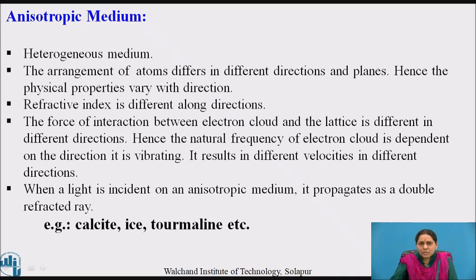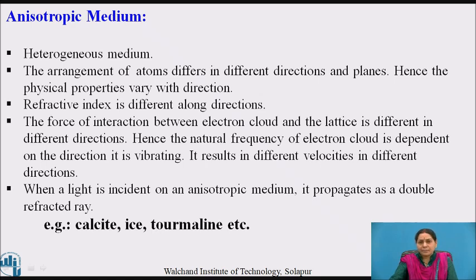An anisotropic medium is a heterogeneous medium. The arrangement of atoms differs in different directions and planes; hence, the physical properties vary with direction. The refractive index is different along different directions. The force of interaction between the electron cloud and the lattice is different in different directions; hence, the natural frequency of the electron cloud is dependent on the direction it is vibrating. This results in different velocities in different directions. When light is incident on an anisotropic medium, it propagates as a double refracted ray. Calcite, ice, and tourmaline are examples.